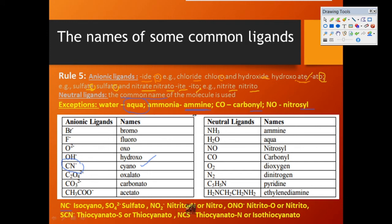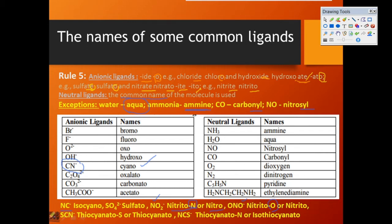SO₄²⁻ is written as 'sulfato'. The NO₂ group can be written as 'nitrito-N' or simply 'nitro', and as 'nitrito-O' or 'nitrito', depending on the donor atom. If it binds through the nitrogen atom it is called 'nitrito-N' or 'nitro'; if it bonds through the oxygen atom it is called 'nitrito-O' or 'nitrito'.